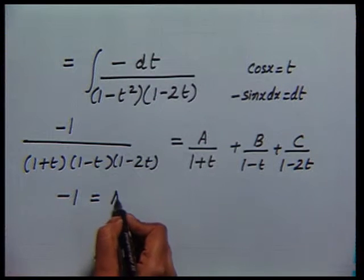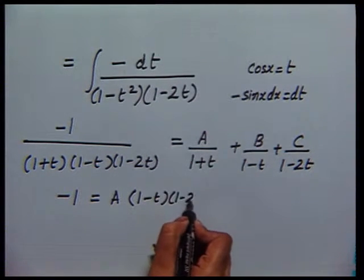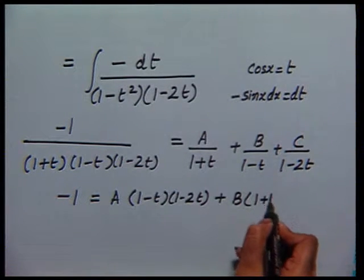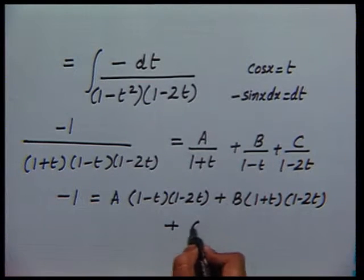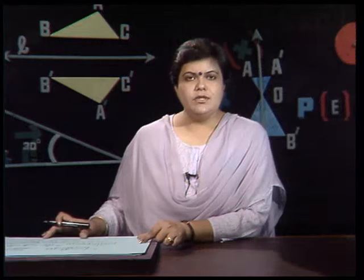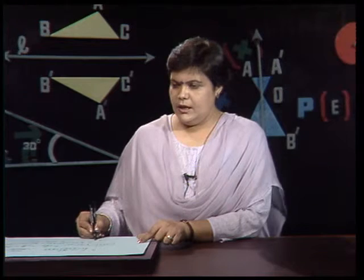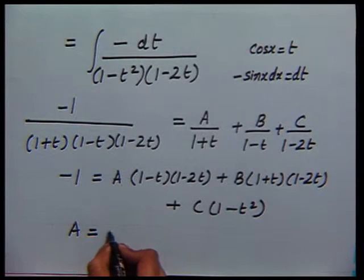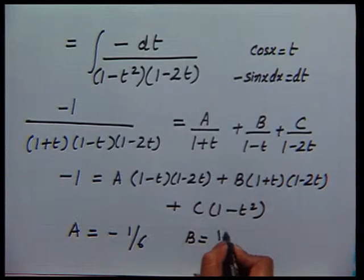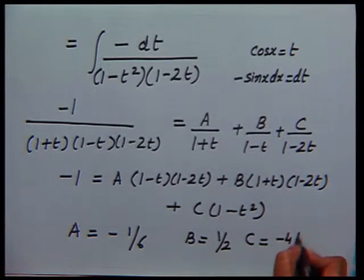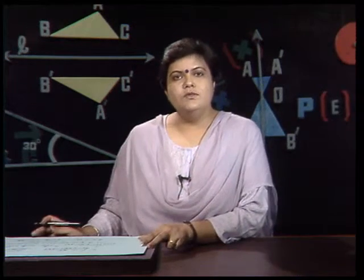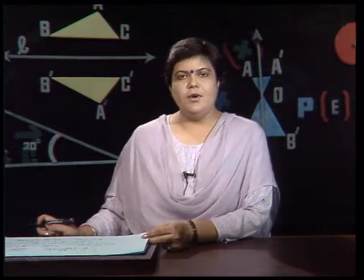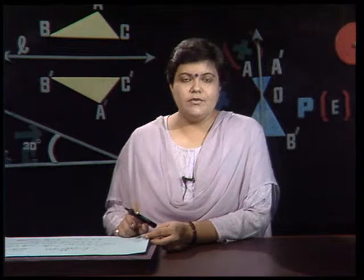We rewrite -1/[(1+t)(1-t)(1-2t)] = A/(1+t) + B/(1-t) + C/(1-2t). Equating numerators: the expression becomes A(1-t)(1-2t) + B(1+t)(1-2t) + C(1-t²). Working through suitable values of t, we get A = -1/6, B = 1/2, and C = -4/3. Once you have these values, substitute back and complete the problem — and do not forget to replace t by cos x at the end, since the answer must be in the original variable x.